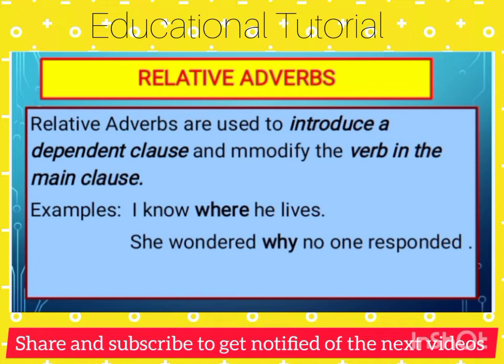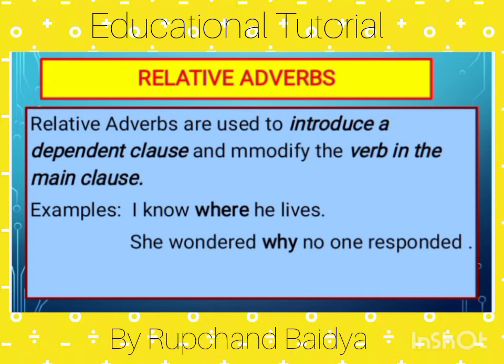Now we have relative adverbs. Relative adverbs are used to introduce a dependent clause and modify the verb in the main clause. Look at the example: 'I know where he lives.' Here 'where' introduces the dependent clause 'he lives' and modifies the verb 'know' in the main clause. In the second example, 'She wondered why no one responded,' the word 'why' introduces the dependent clause 'no one responded' and modifies the verb 'wondered' in the main clause. So 'why' is a relative adverb.